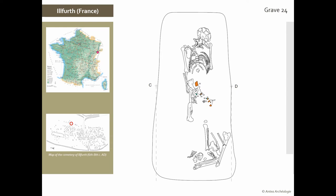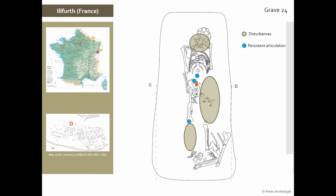This grave contains the remains of a male adult. The first disturbance is located around the neck, with the displacement of the cranial, mandibular, and some cervical vertebrae. The second disturbance concerns the left part of the skeleton from the forearm to the left femur, and also includes the right tibia and fibula. This disturbance involves persistent articulation — articulations that are preserved longer during the decomposition process. The fact that these elements are not found in connected condition anymore means the body was already reduced to a skeletal state, or that ligament attachments were already very weak at the time of the reopening.